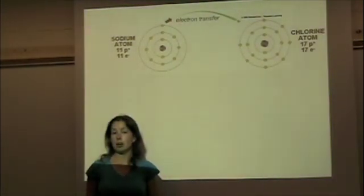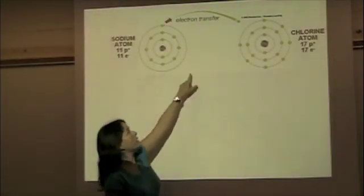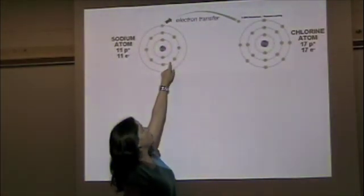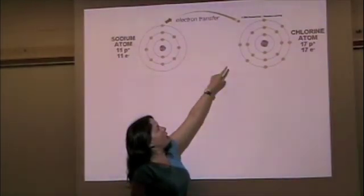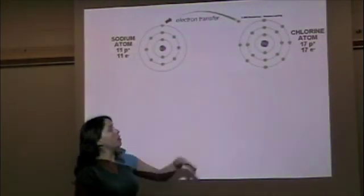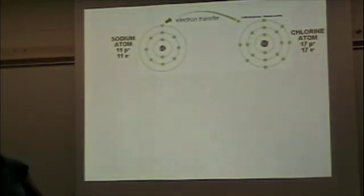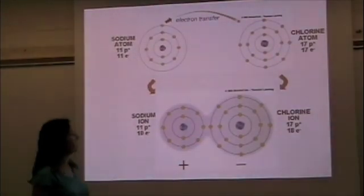And again, it's unstable. It would like to gain 1 electron to have a full outer shell. So chlorine is going to pull the electron from sodium, and that's going to create a full outer shell in sodium and a full outer shell in chlorine, creating 2 ions. That's what we see here.